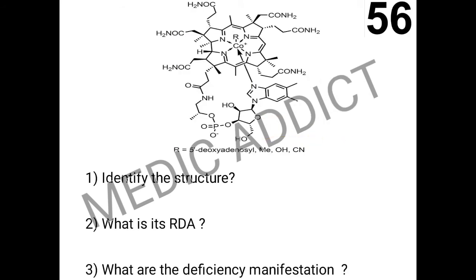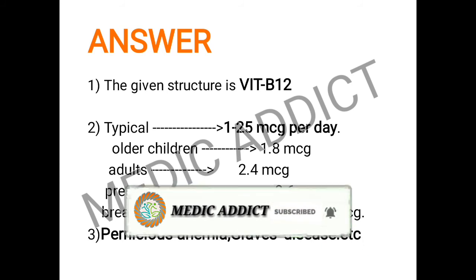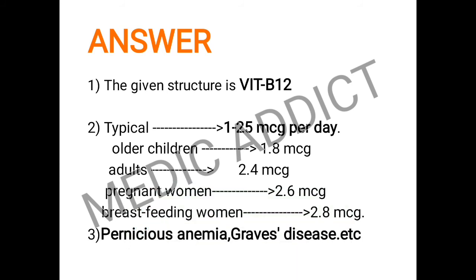In the next spot, based on the image, we have to identify the structure, write its RDA, and describe its deficiency manifestations. The given structure is vitamin B12. The RDA is typically 1–2.5 mcg per day; for older children it is 1.8 mcg per day; for adults it is 2.4 mcg per day; and for pregnant and breastfeeding women it is increased to 2.6 and 2.8 mcg per day respectively. The deficiency manifestations of vitamin B12 include pernicious anemia.